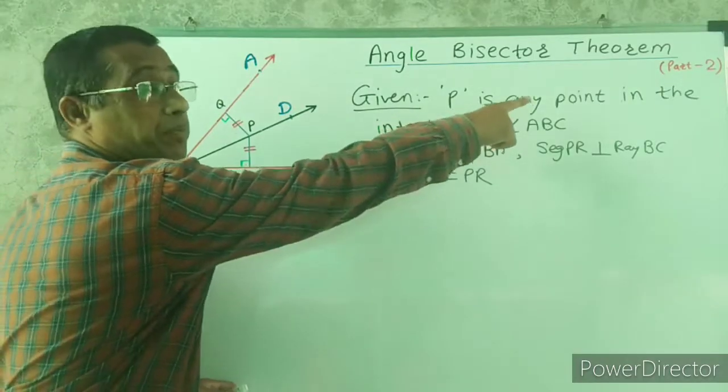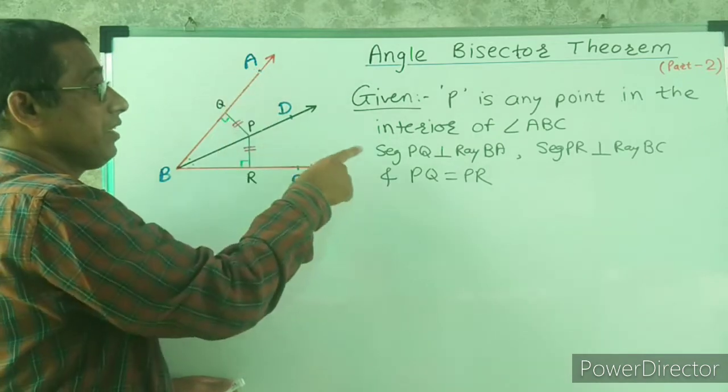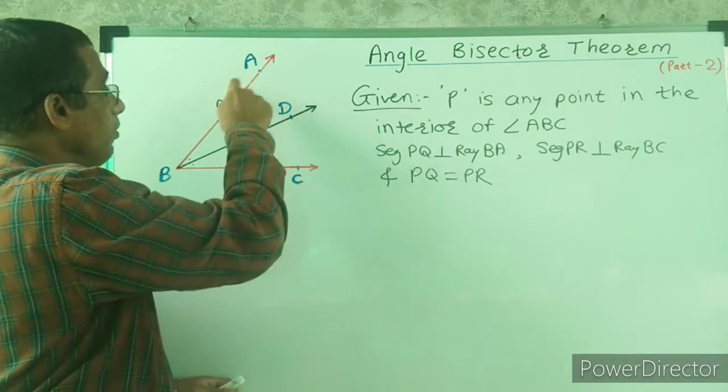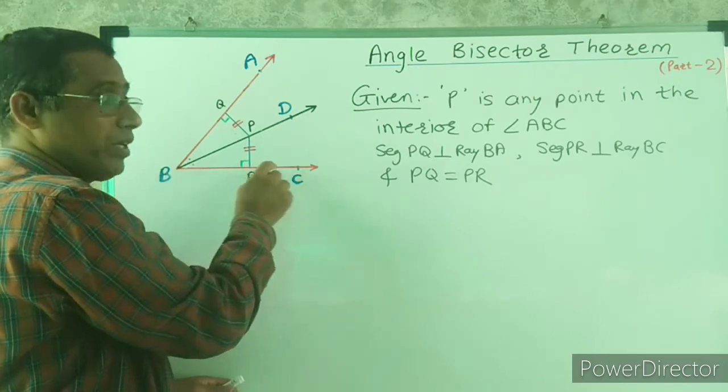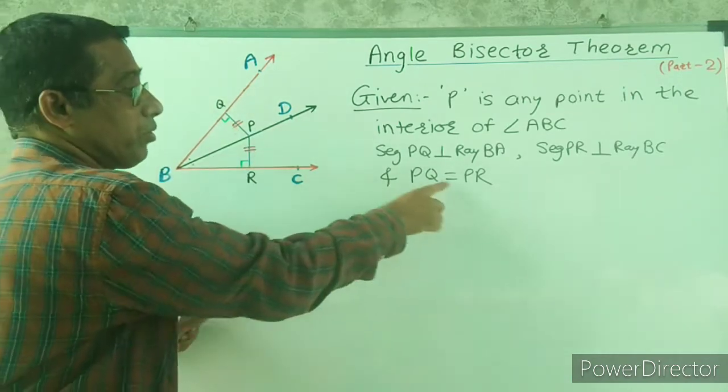P is any point in the interior of angle ABC, PQ perpendicular to ray BA, PR perpendicular to ray BC, PQ equal to PR.